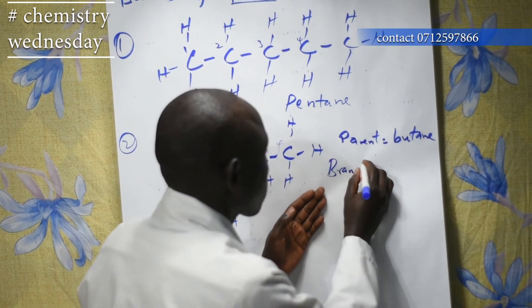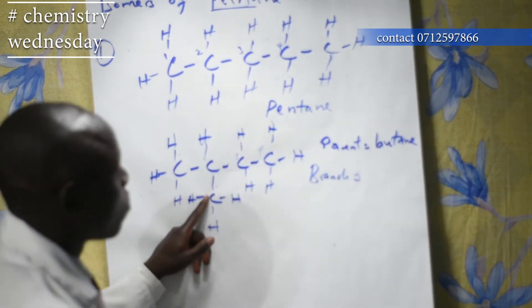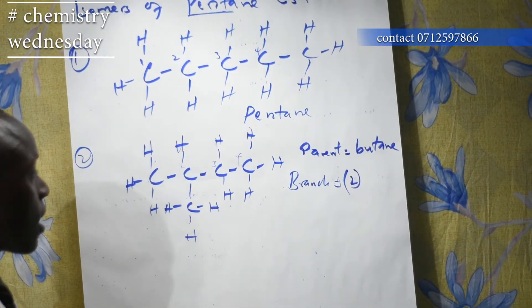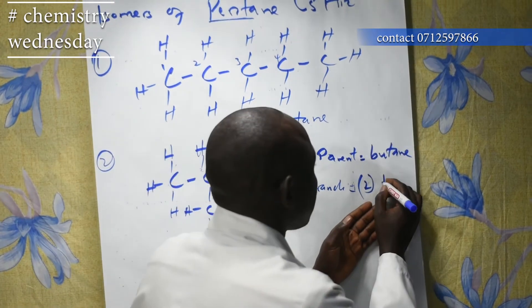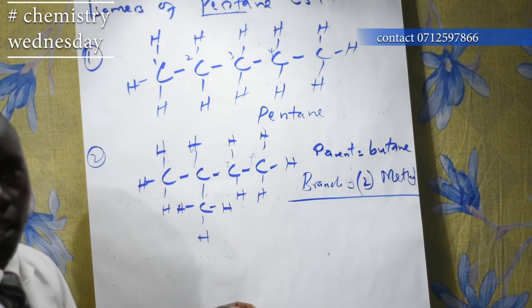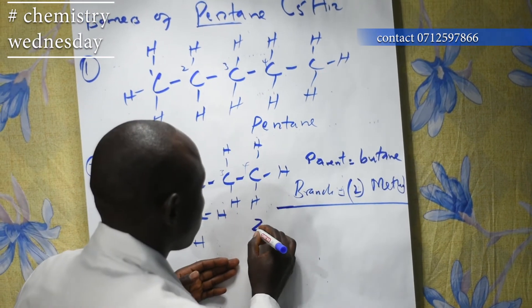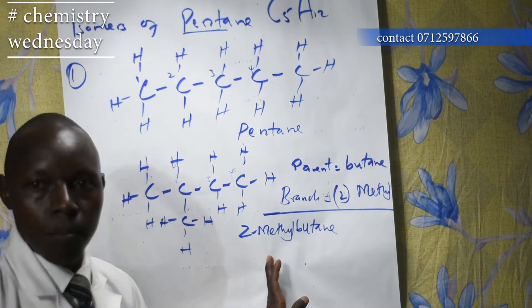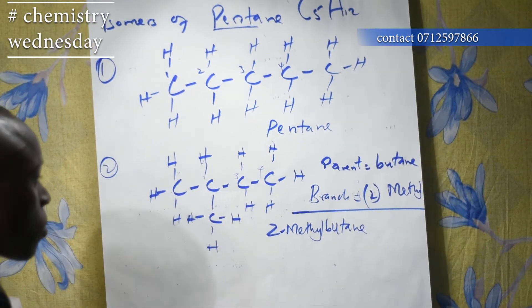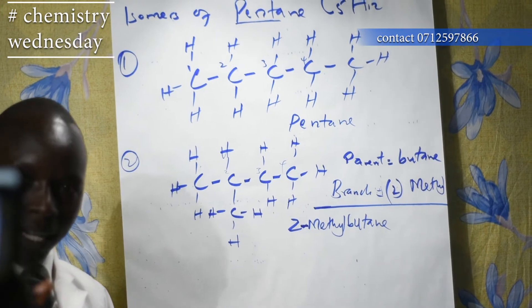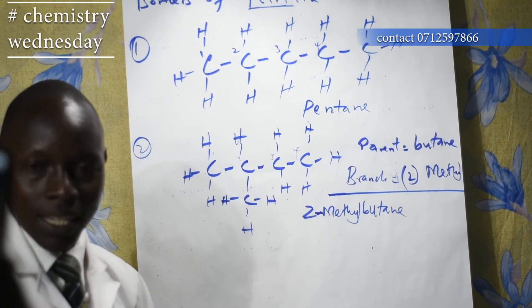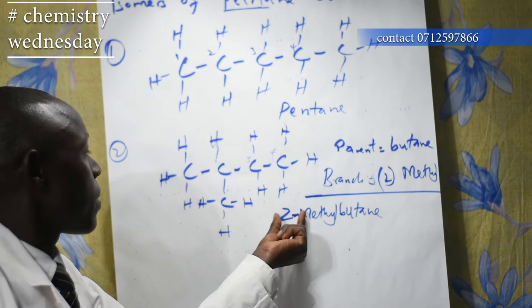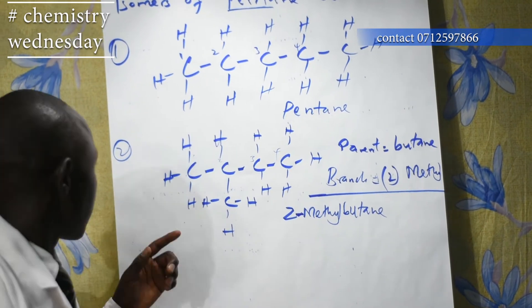The branch at carbon number 2 is a CH3, which we have said is called methyl. So the whole name becomes 2-methylbutane. When we are writing the name, we use a dash or hyphen to separate the numbers and the name. So: two-dash-methyl-butane, which is 2-methylbutane.